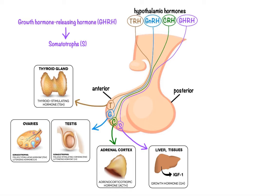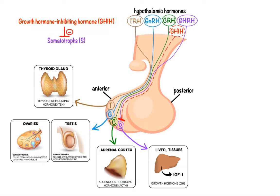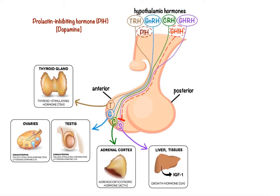Lastly, we have two inhibiting hormones: growth hormone-inhibiting hormone, GHIH for short, which inhibits somatotrophic cell release of growth hormone, and prolactin-inhibiting hormone, PIH for short, which is simply the neurotransmitter dopamine that acts on lactotrophs to inhibit the secretion of prolactin.